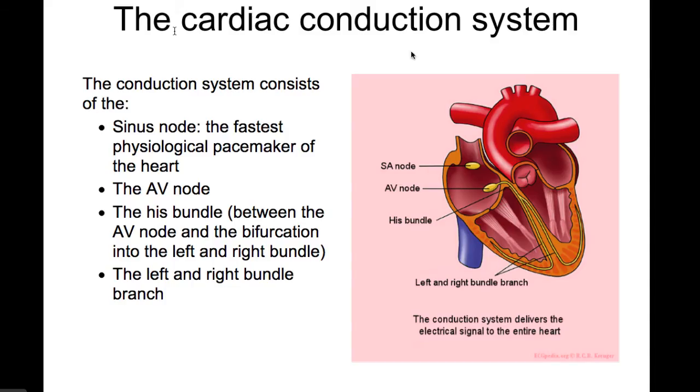The cardiac conduction system delivers all this electricity through the heart. It starts with the sinus node, which is the fastest physiological pacemaker in the heart. It is a group of cells in the roof of the right atrium that shows spontaneous firing. This electricity goes through the atrium to the AV node and spreads through the His bundle and the left and right bundle branch to the cardiac muscles.